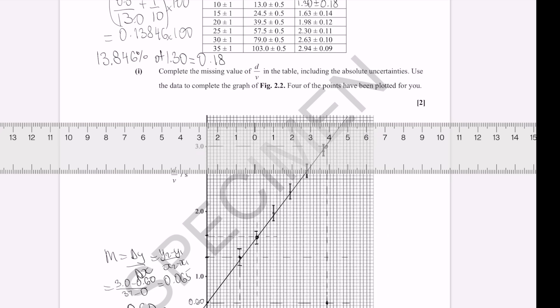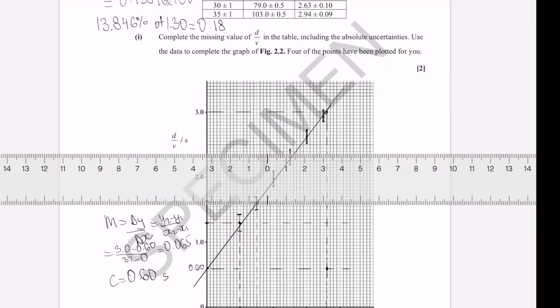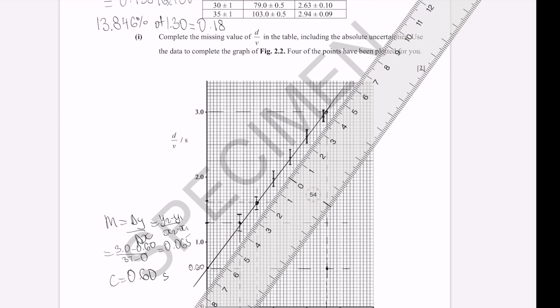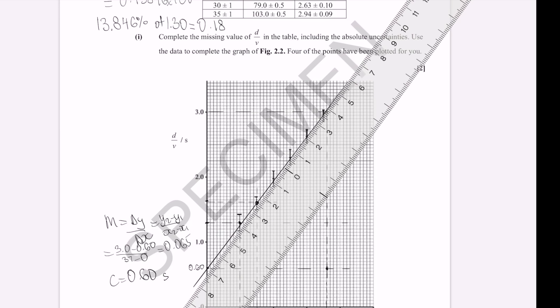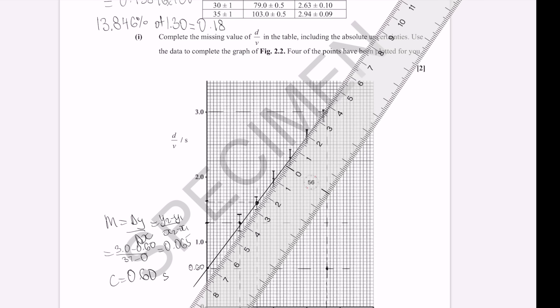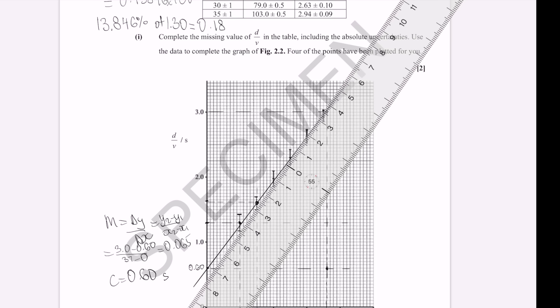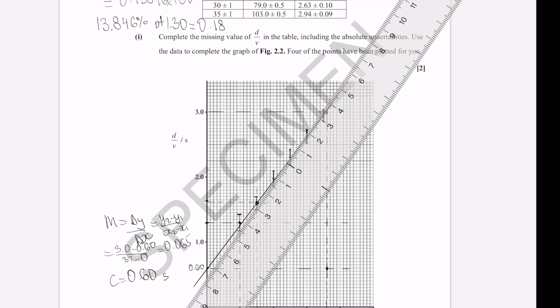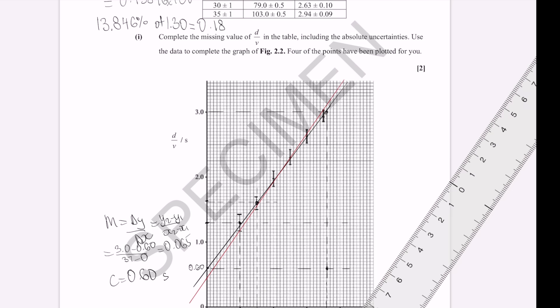So, how do we actually draw the line of worst fit? Should we just plot that in red, maybe? Well, I tend to remember bottom of the bottom error bar to the top of the top error bar. So, this here. You can also do it the other way around, but it's just a useful way to remember it. Let's see if I can just about do that on an iPad. So, something like this. Like so. And this here is our line of worst fit.